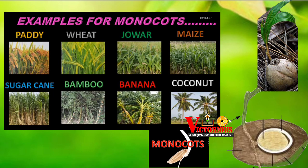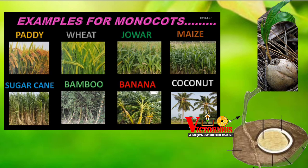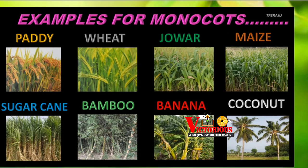Let's take a few examples of monocots. Examples of monocots include: paddy, wheat, maize, sugarcane, bamboo, banana, coconut, nut grass, palm, onion, garlic, ginger, plantain, and barley. These are monocots.